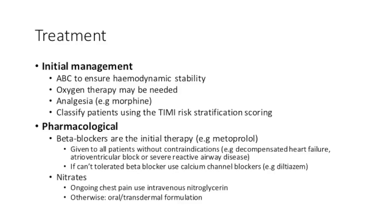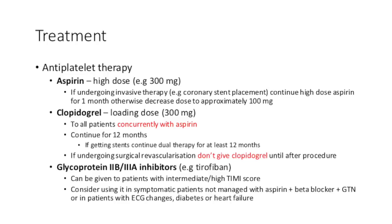We can give intravenous nitroglycerin or oral and transdermal formulations. Antiplatelet therapy is also really important. We can give patients high-dose aspirin — 300mg. If undergoing invasive therapy such as stent placement, we continue high-dose aspirin for one month, then decrease the dose to approximately 100mg per day. Clopidogrel is also given as a loading dose with aspirin to all patients, typically continued for 12 months. However, if a patient is having an invasive procedure like stent placement, clopidogrel should be held until the procedure is over; after stenting, they need aspirin and clopidogrel for at least 12 months. Glycoprotein IIb/IIIa inhibitors can be given to patients with intermediate or high TIMI scores, or in symptomatic patients not managed well with aspirin, beta blockers plus GTN, or in patients with ECG changes, diabetes, or heart failure. The mainstay of treatment remains aspirin and clopidogrel.